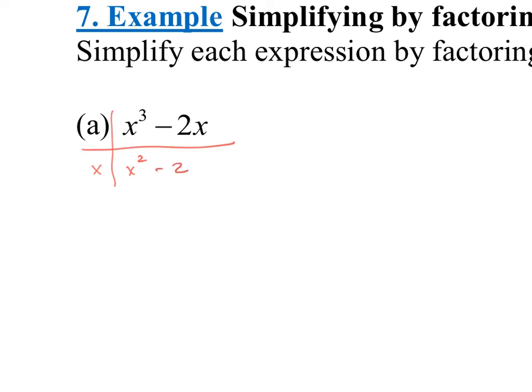So this is one factored version: x times x squared minus 2. The last thing we want to do is make sure we can't factor any further. Looking at x squared minus 2 — this is not a difference of squares, so it does not factor. For instance, if that were x squared minus 4, we would have to continue and factor further. Always make sure when you factor that you're factoring completely. The final answer is x times x squared minus 2.